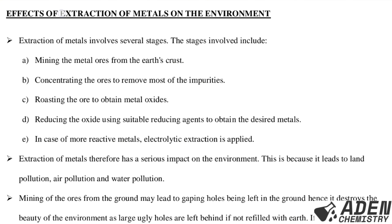Next, let's proceed to the effects of extraction of metals on the environment. Extraction of metals involves several stages. These stages include: A, mining of the metal ores from the earth's crust; B, concentrating the ores to remove most of the impurities; C, roasting the ore to obtain metal oxides; D, reducing the metal oxides using suitable reducing agents to obtain the desired metals.